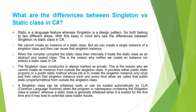The singleton class constructor is always marked as private. This is the reason why we cannot create an instance from outside the singleton class. It provides either a public static property or a public static method whose job is to create the singleton instance only once and then return that singleton instance. The singleton class can be initialized lazily or can be loaded automatically by the CLR when the program or namespace containing the singleton class is loaded, whereas the static class is generally initialized when it is loaded for the first time, which may lead to potential class loader issues.